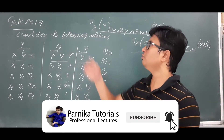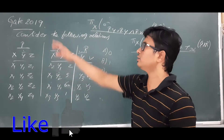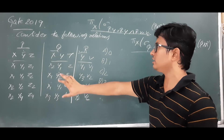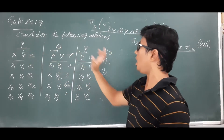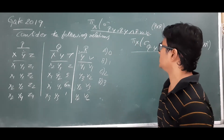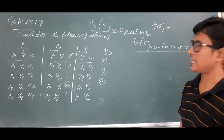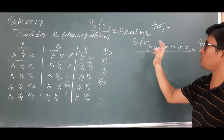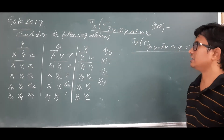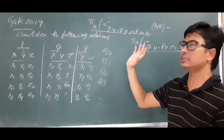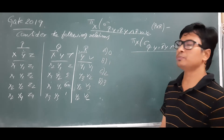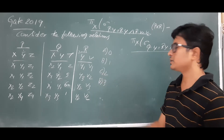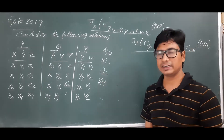Good morning friends. In this video we will solve one of the GATE questions from 2019. Consider the following relations — they have given three relations: P, Q, R with some attributes and tuples. They have given one relational algebra expression — expression one and expression two — then you need to perform the set difference between them. They are asking how many tuples you will get as output. Options: A is zero, B is one, C is two, D is three.